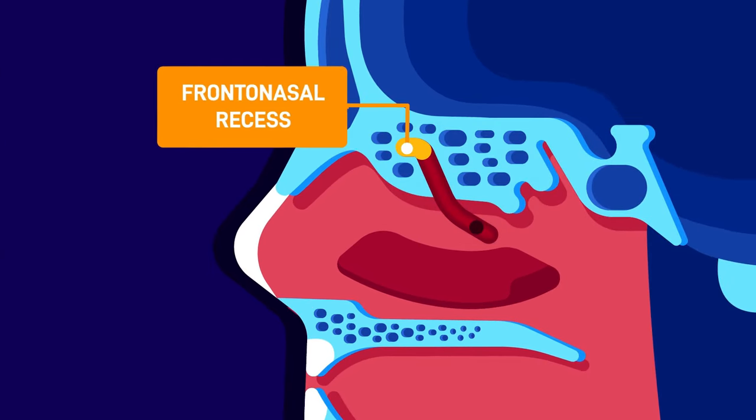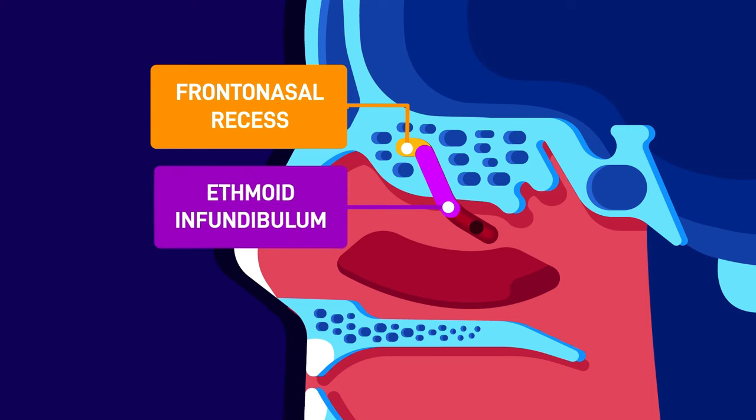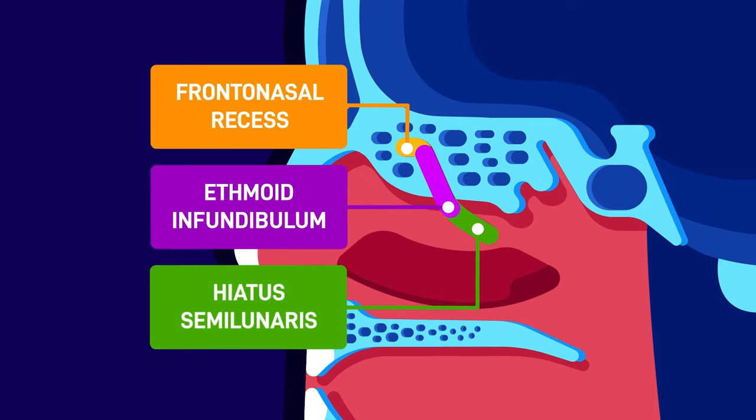The frontal sinus drains via the frontonasal recess, which leads into the ethmoid infundibulum, which then leads into the hiatus semilunaris in the middle meatus.